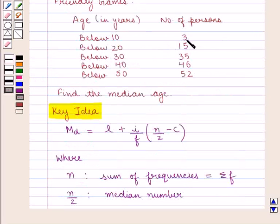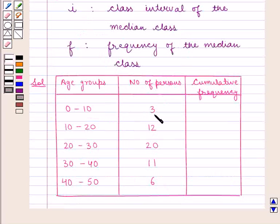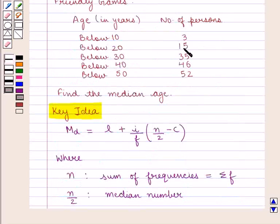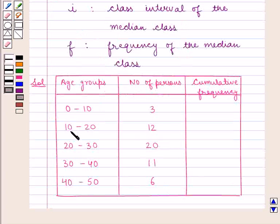There are 3 persons in the below-10 age group, so the number of persons in the age group 0-10 will be 3. Since there are 15 persons in the below-20 age group, the age group 10-20 will have 15 minus 3, that is 12 persons. Similarly, we get 20 persons in 20-30, 11 persons in 30-40, and 6 persons in 40-50.